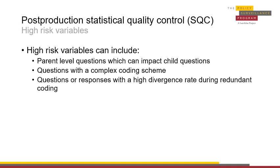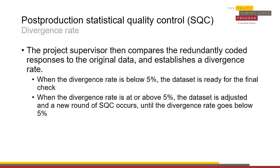Weighing the sample can ensure that tricky questions are coded accurately before a dataset is published. Once the researchers have redundantly coded the sample, the divergence rate should be calculated using the same methods as for redundant coding. The sample should be overlaid with the original data in Excel, and formulas should be used to determine the divergence rate.